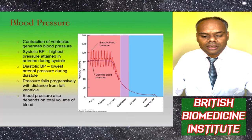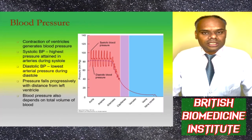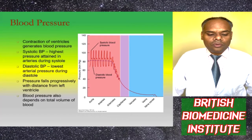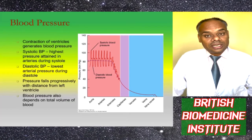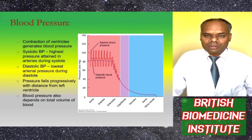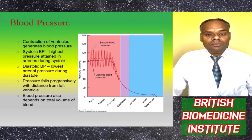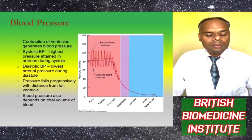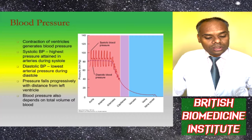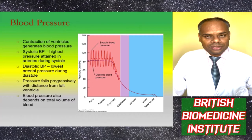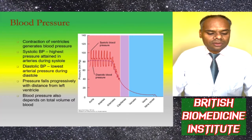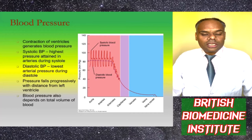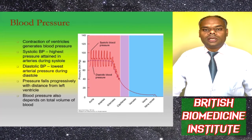Blood pressure consists of systolic and diastolic blood pressure. Contraction of the ventricles generates blood pressure; systolic blood pressure is the highest pressure attained in arteries during systole, and diastolic pressure is the lowest arterial pressure occurring during diastole. Pressure falls progressively with distance from the left ventricle, and blood pressure also depends on total blood volume.